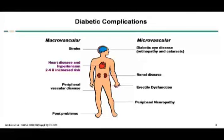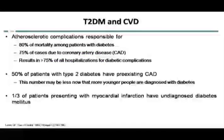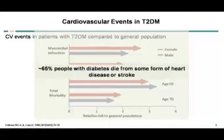Cardiovascular disease, as you know, is a macrovascular complication of diabetes. Apart from the heart, we get stroke and peripheral vascular disease. Atherosclerotic complications are responsible for 80% mortality among patients with diabetes. 75% of cases are due to coronary artery disease, resulting in more than 75% of all hospitalizations for diabetes complications. 50% of patients with type 2 diabetes have pre-existing coronary artery disease, and one third of patients presenting with myocardial infarction have undiagnosed diabetes.